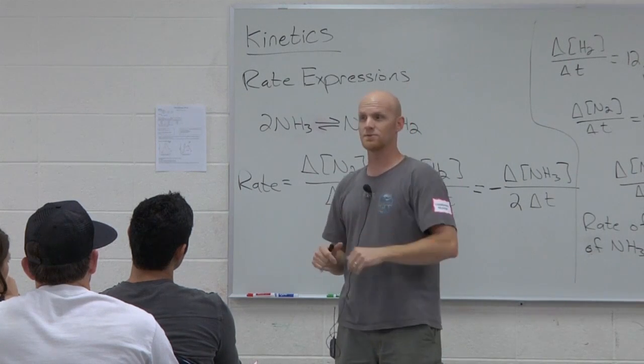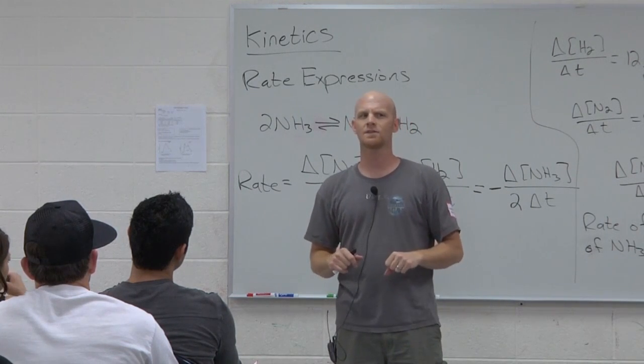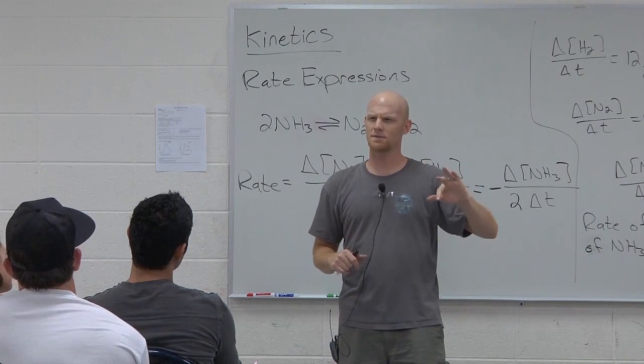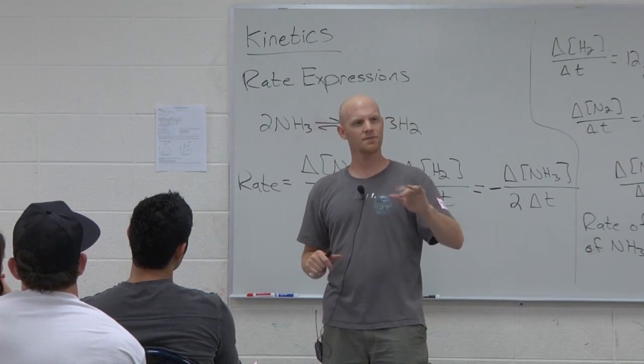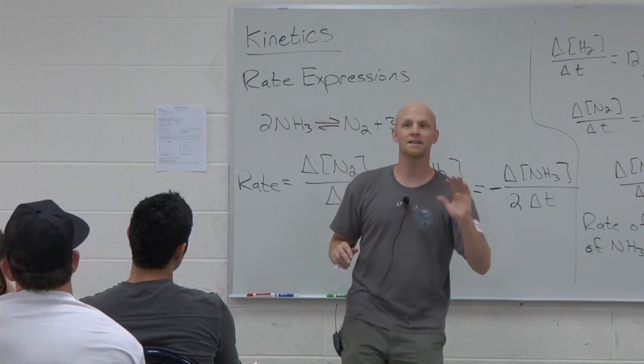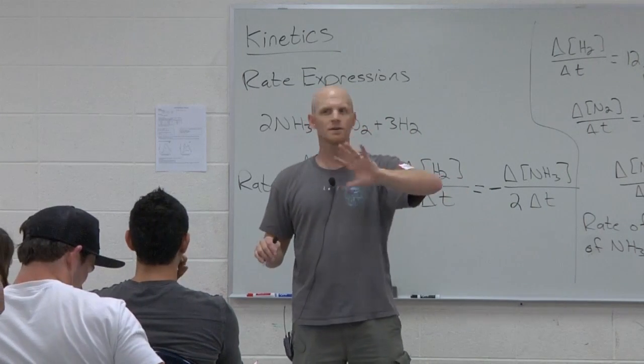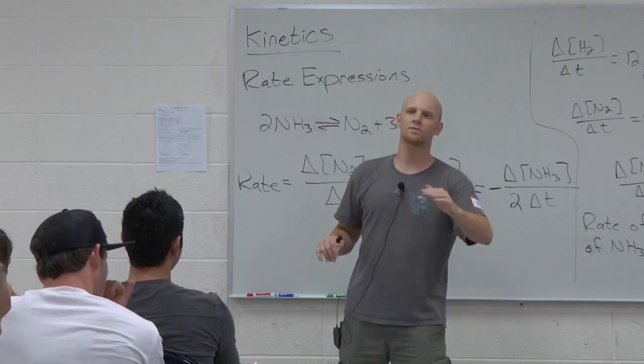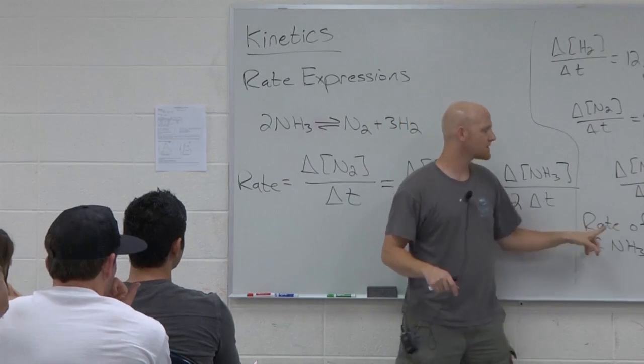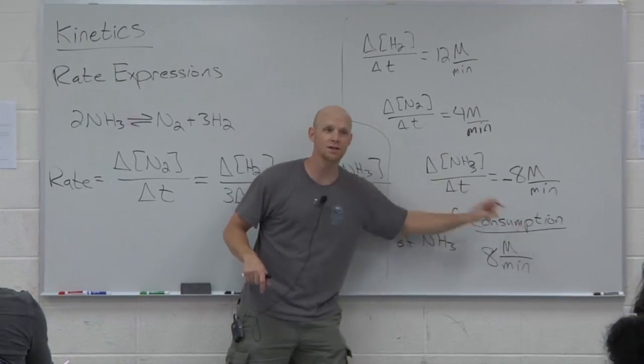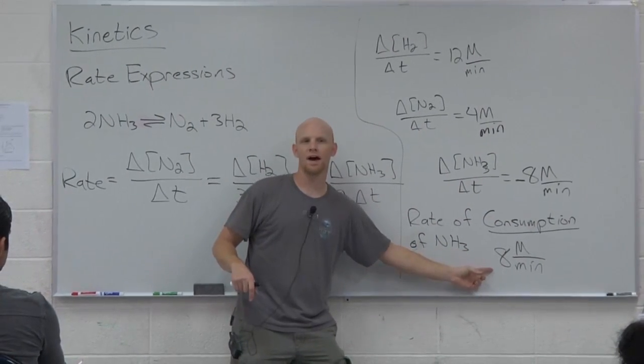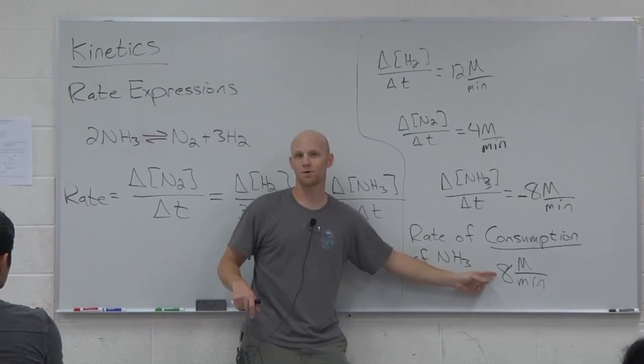And if he says, negative $5,000, I'm going to scratch my head and be like, does that mean you gained $5,000? But notice, if I already said, how much did you lose? You're never going to use that negative sign. Then you just say, I lost $5,000. Same thing here. If I'm already talking about a rate of consumption, then we already know it's going down. And so, we just give the absolute value, 8 molar per minute.